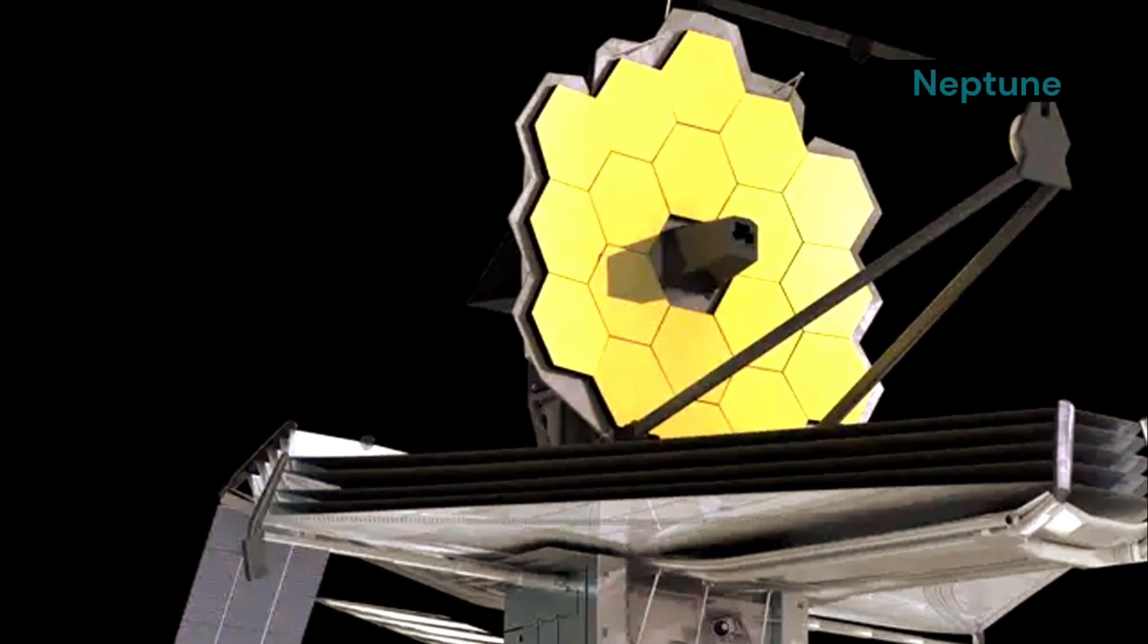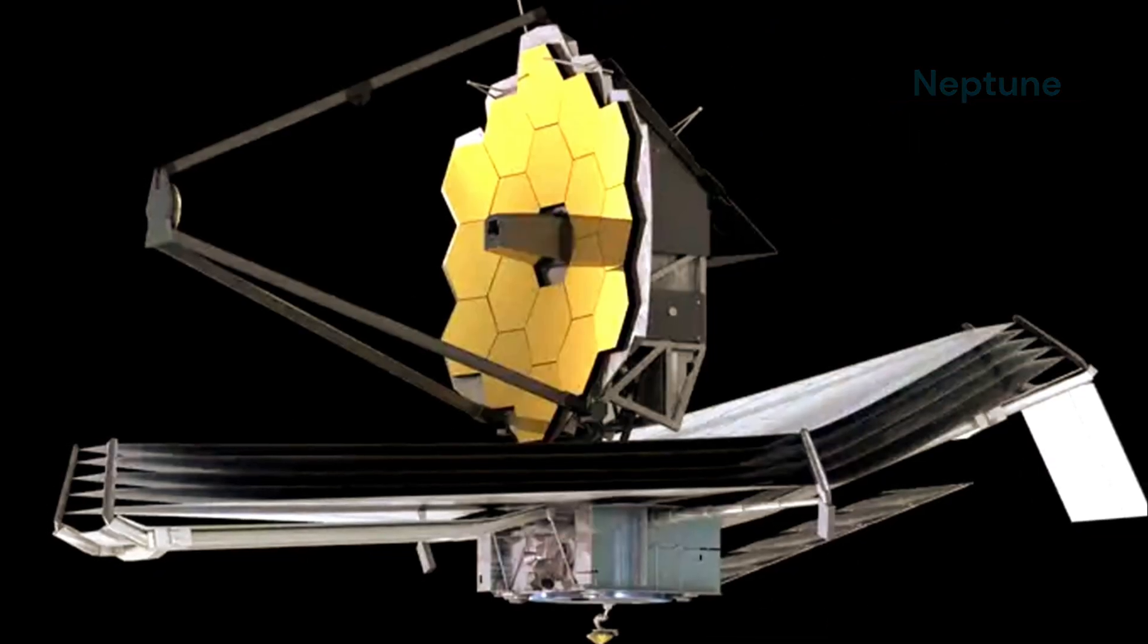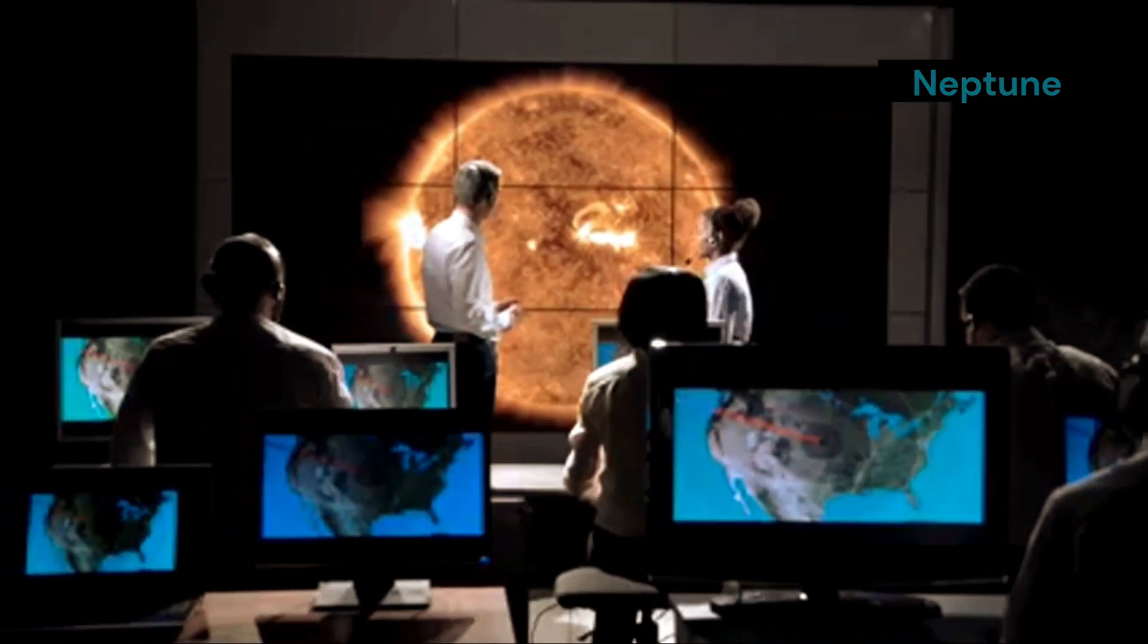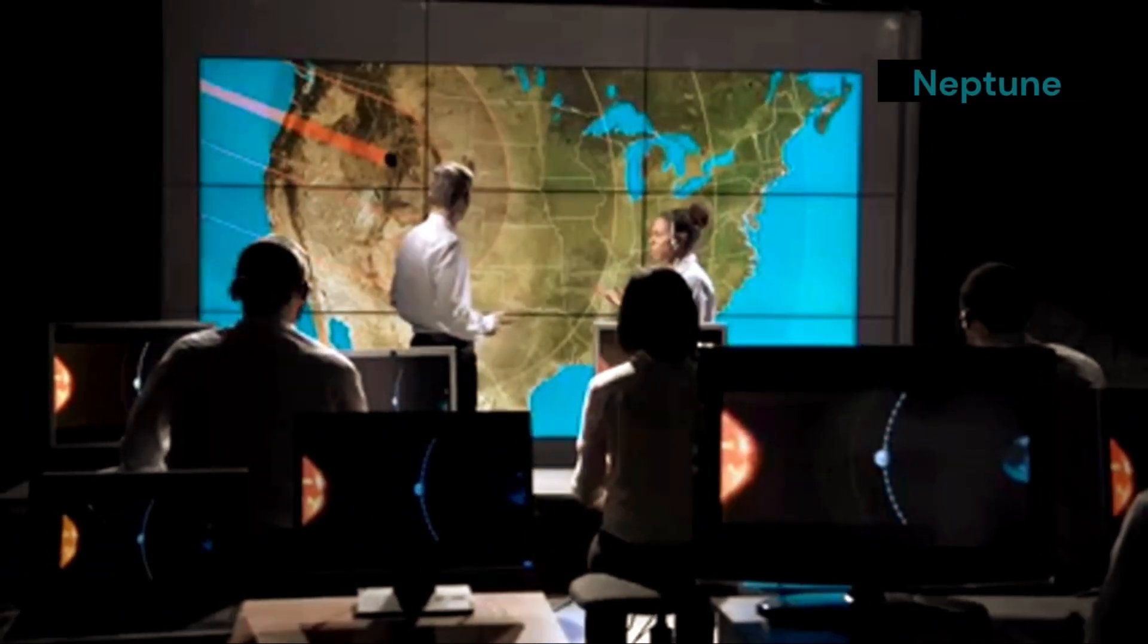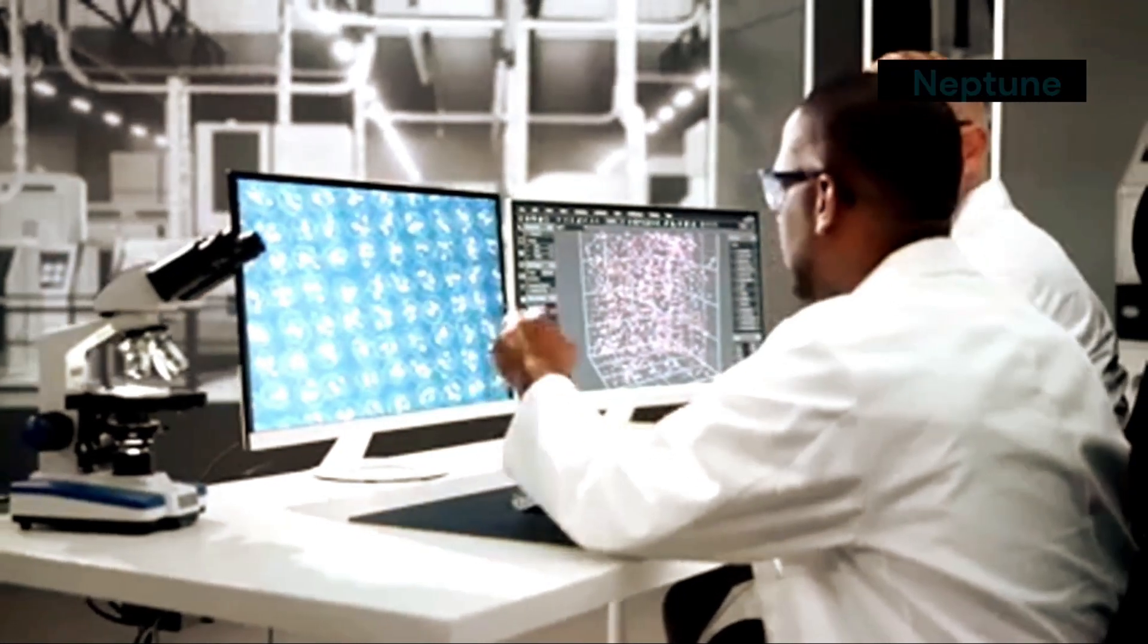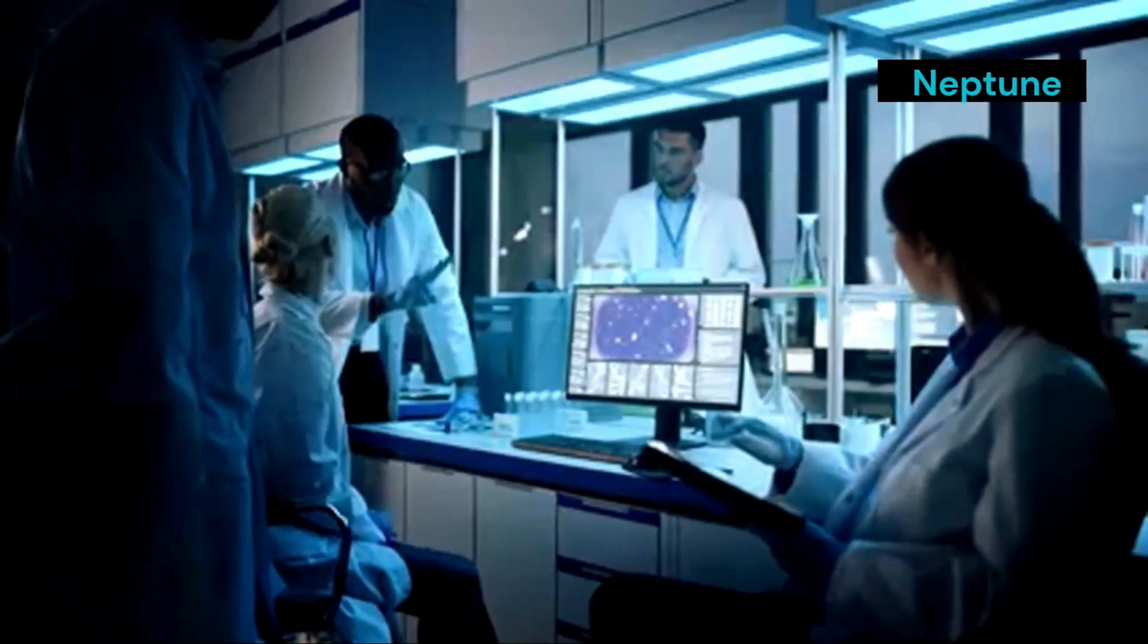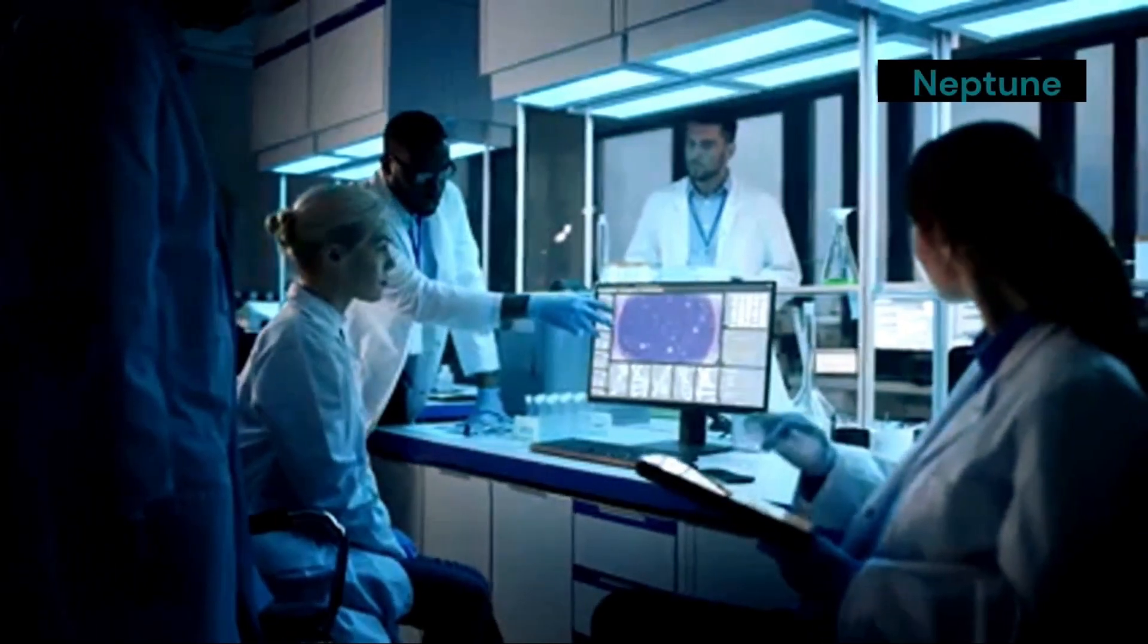But the JWST, with its advanced technology, has given us a front row seat to this cosmic spectacle. Its powerful instruments allow us to see details that were previously impossible to capture. The data it collects will be crucial for understanding the evolution of planets and the dynamics of our solar system. This information will help us piece together the history of our cosmic neighborhood and perhaps even predict future events. Scientists are now collaborating globally, sharing their findings and theories. This event has sparked a new wave of interest and research into the outer solar system.